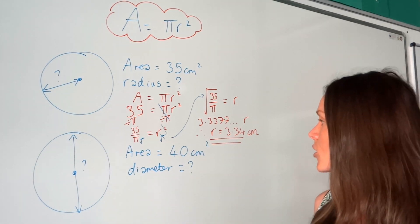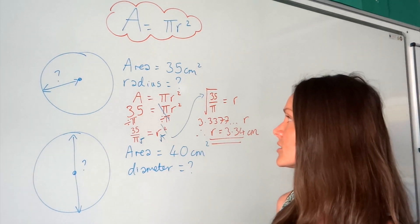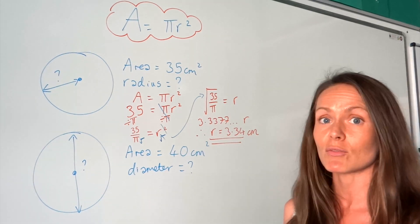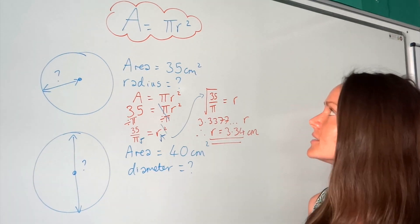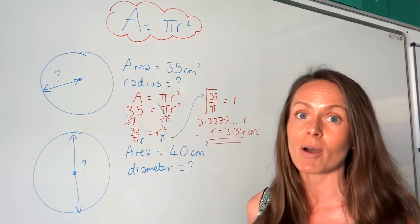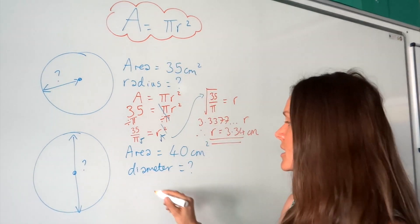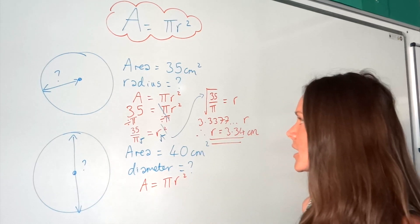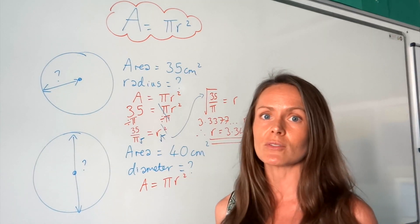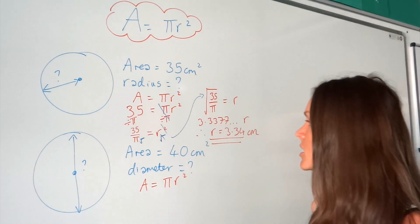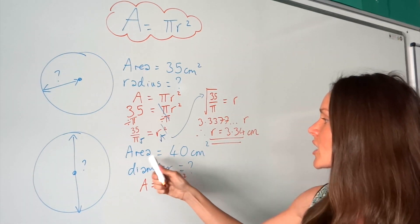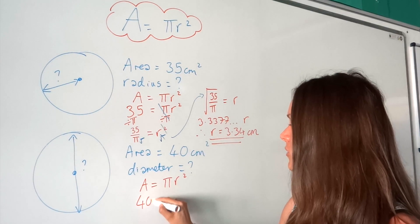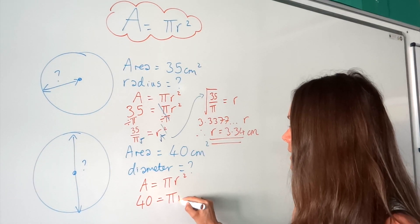Now for the second example, we're going to start exactly the same way. Because we've been given the area of the circle, I'm going to start by writing down the formula: A equals pi r squared. Then the second step, just like before, is to substitute in what you know. So I'm going to change A, which is the area, to 40. So now we've got 40 equals pi r squared.